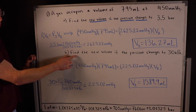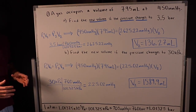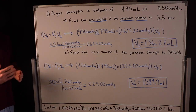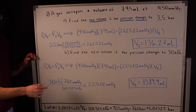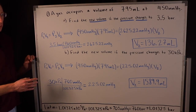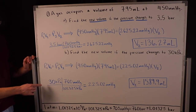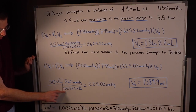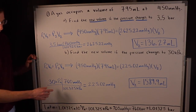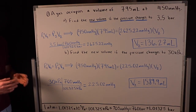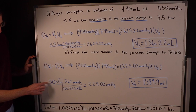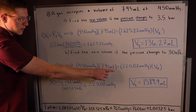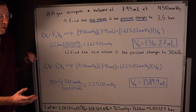Part B asks for the new volume if the pressure changes to 30 kilopascals. Again it's Boyle's law — we need matching units. Starting with 30 kilopascals, I convert using the fact that 760 mmHg equals 101.325 kPa, giving 225.02 mmHg. Plugging P2 = 225.02 mmHg into P1V1 = P2V2 with P1 = 450 mmHg and V1 = 795 mL, and solving for V2, we get 1589.9 milliliters as the final volume.